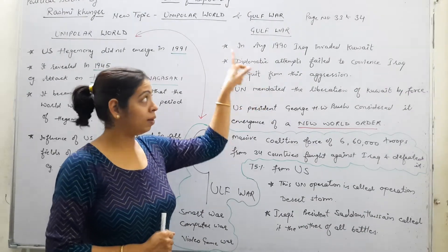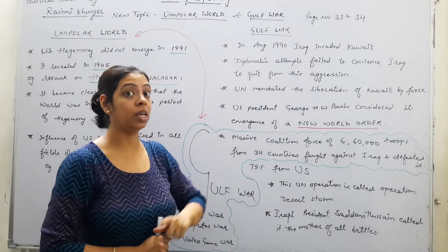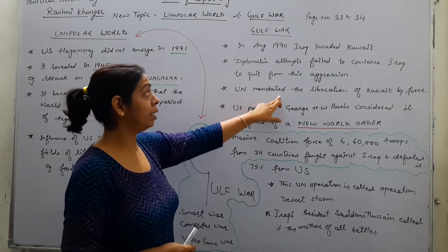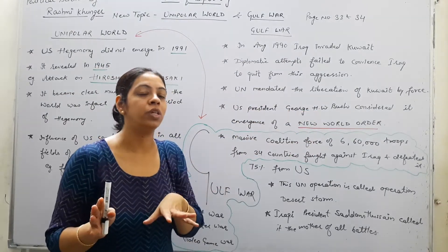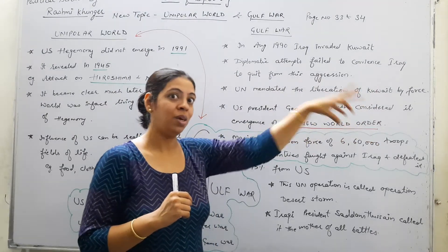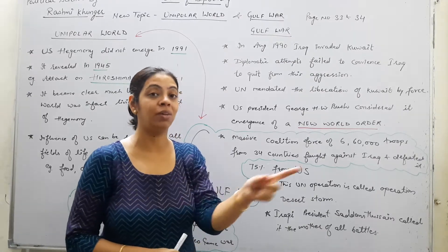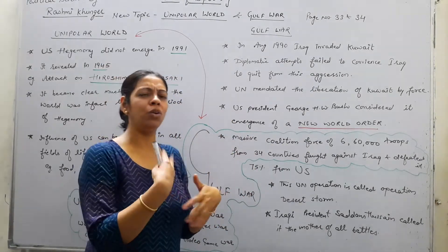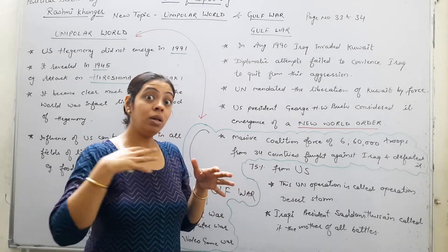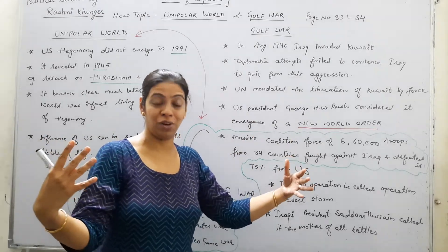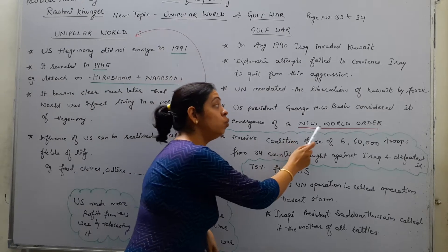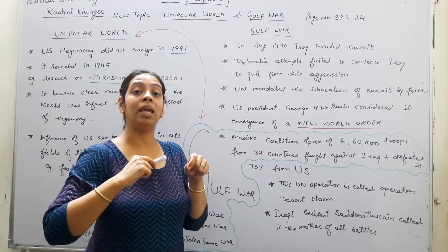Other countries told Iraq not to do it and tried to convince them, but all of it failed because Iraq did not agree. The United Nations then mandated the liberation of Kuwait by force. The UN is an international organization with many member countries. US President George H.W. Bush considered this the emergence of a new world order, in which countries came together to stop this aggression.